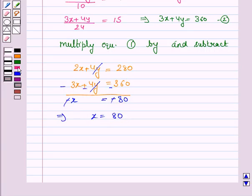Now to obtain the value of y, we will put x is equal to 80 in any one of the two equations, 1 or 2. Here we will put x is equal to 80 in equation 1. Equation 1 is x plus 2y is equal to 140.